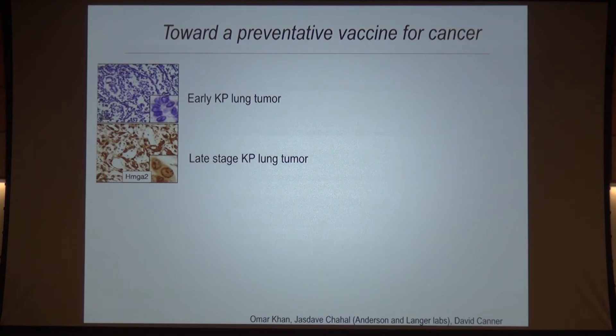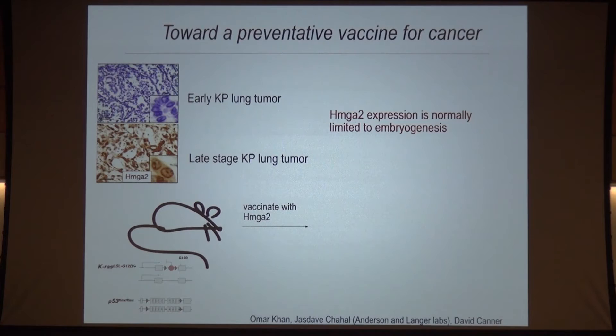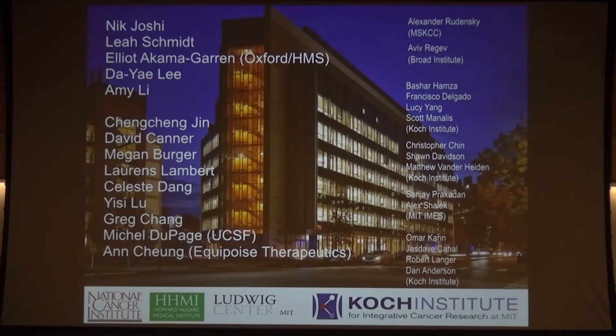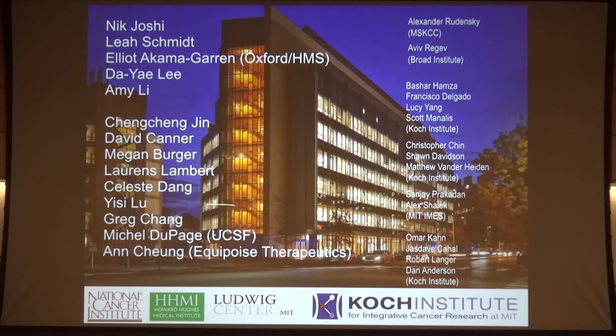In addition to being interested in immune-based therapies, we are beginning to explore immune-based prevention strategies — not something the business world is terribly interested in, but scientifically and for public health reasons would be a really good thing to do. We're at early stages but quite excited about what we're starting to see. Most of the early work was done by Nick Joshi, following on research from Michael Dupage, and Leah Schmidt did the NK cell work. Thanks very much.